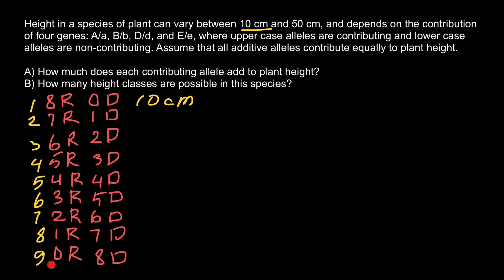And this genotype, which has all dominant alleles — capital A, capital A, capital B, capital B, capital D, capital D, capital E, capital E — gives a plant height of 50 centimeters.